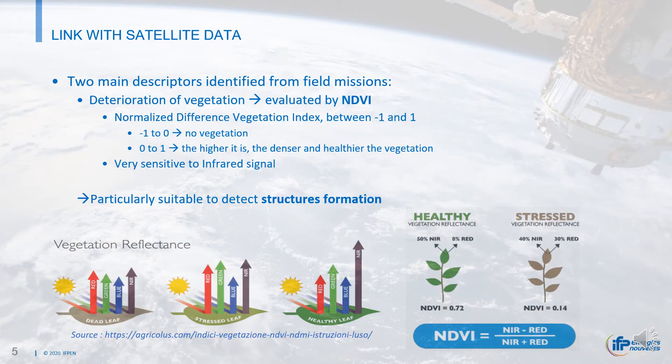In order to better understand the temporal evolution of the vegetation, we need to have a more extensive data sampling using visible satellite imagery. In addition, infrared images based on radiometry properties will provide quantitative information on vegetation changes.